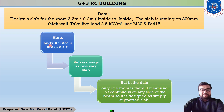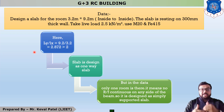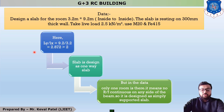Our LY/LX ratio: LY is the longer dimension 9.2, and LX is the shorter dimension 3.2, giving a ratio of 2.872. Since 2.872 is greater than 2, whenever LY/LX is greater than or equal to 2, it is considered a one-way slab. So we design this slab as a one-way slab.